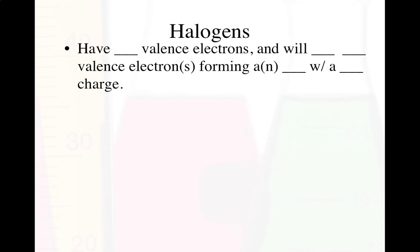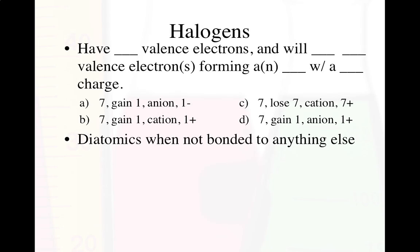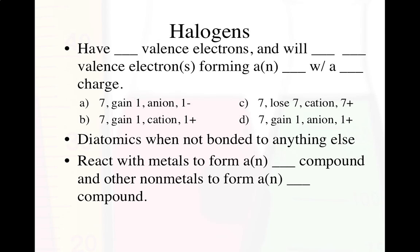The halogens have 7 valence electrons, and they are going to gain one valence electron, forming an anion with a −1 charge — that's the correct answer. We know they will be diatomic when not bonded to anything else, because they are so reactive they latch onto whatever they can, quite often one of their own. They react with metals to form ionic compounds and with other non-metals to form covalent compounds.